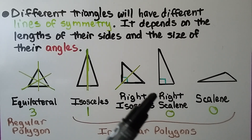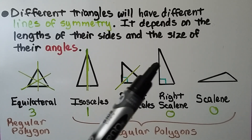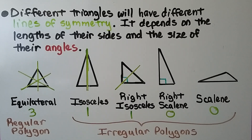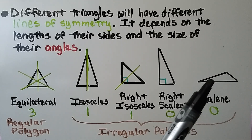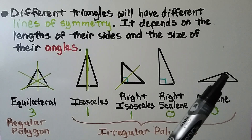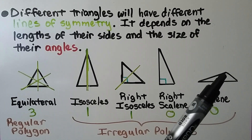A right scalene triangle has a right angle indicated by a square corner, but all three sides are different lengths, so it has zero lines of symmetry. A scalene triangle has three different side lengths with one acute, one acute, and one obtuse angle — it also has zero lines of symmetry.